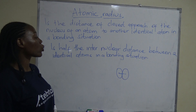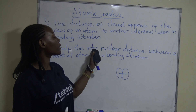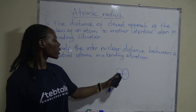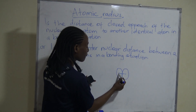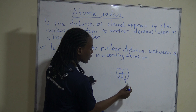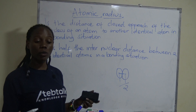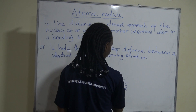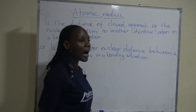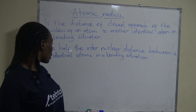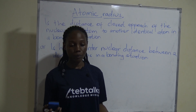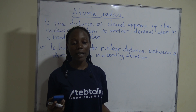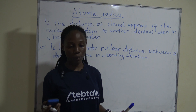That is the internuclear distance, and we take half of it — from here to here, then divide by two — to get the atomic radius. The bonding situation is metallic if the two identical atoms are both metals.